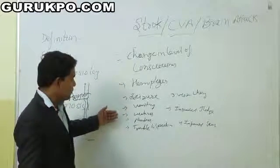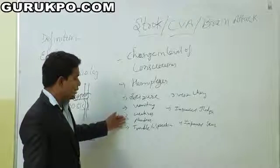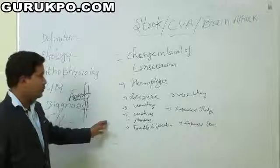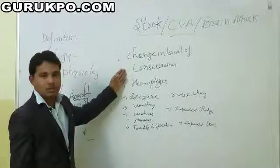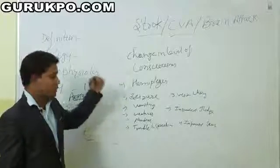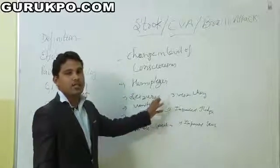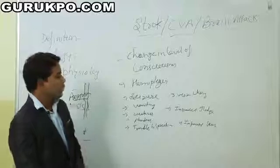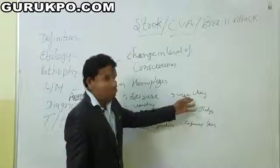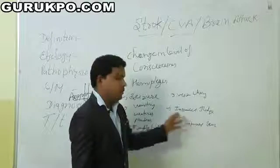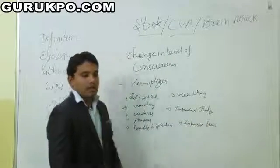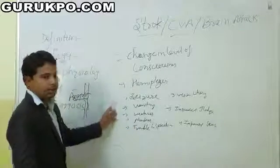Another one is vomiting, weakness, numbness, trouble in speaking. The patient or individual cannot speak properly because he is in unconscious level or semi-conscious level due to changes in level of consciousness. The third one is visual changes, increasing IOP in the brain, impaired judgment, and impaired sensory and motor functions. These are the clinical manifestations.